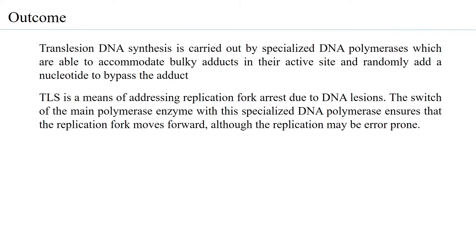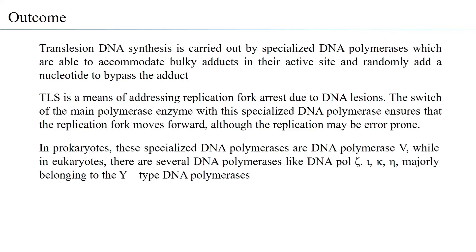TLS is a means of addressing replication fork arrest due to DNA lesions. The main polymerizing enzyme cannot go beyond the base lesion — it would generally fall off or stall at that position. Therefore there is a polymerase switch between the main polymerase and a specialized DNA polymerase, which then ensures the replication fork moves forward, although the replication may definitely be error prone.